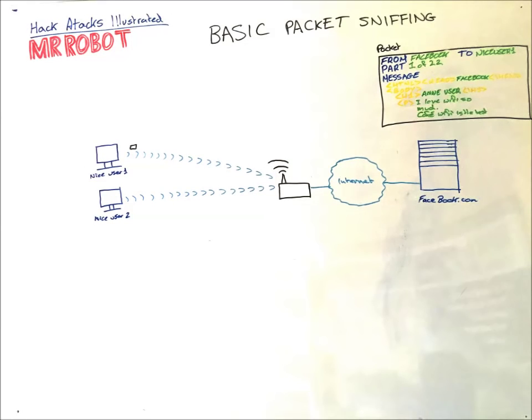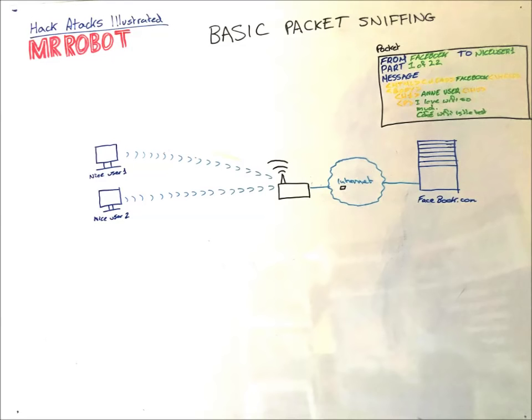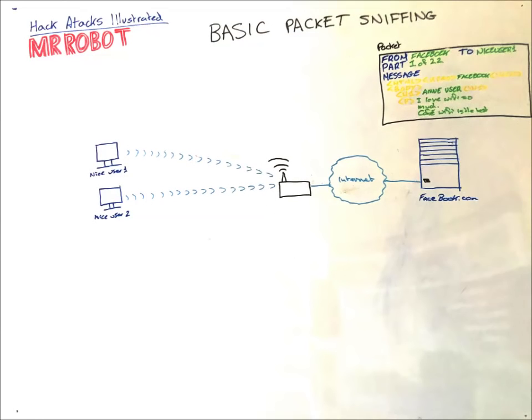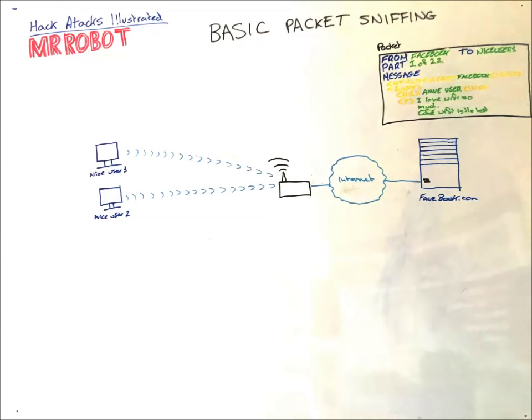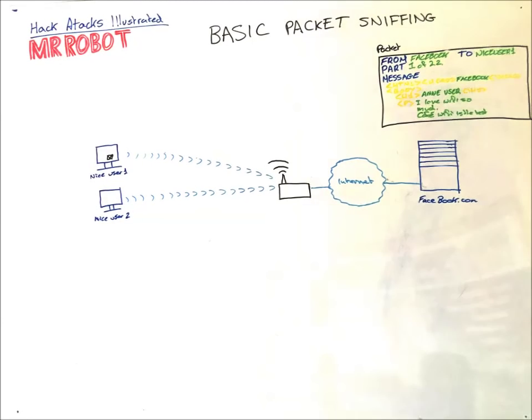So the first packet travels in the form of radio waves over a Wi-Fi connection to the router. And then travels over something like ADSL to the internet and to Facebook servers. Facebook then sends a packet back through the internet, the router, and the Wi-Fi to niceuser1. So here's how it works.